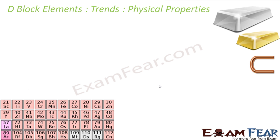Let's start with the physical properties. Almost all the transition metals have metallic properties — that's why they're called transition metals. When I say metallic properties, they have high tensile strength, they are ductile, they are malleable, they have high thermal and electrical conductivity, metallic luster, and high melting and boiling points. There are some exceptions.